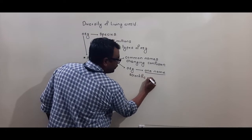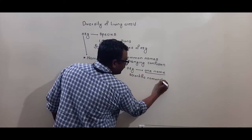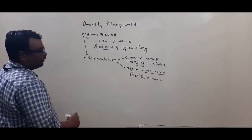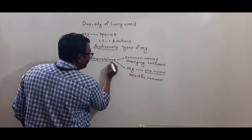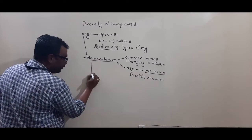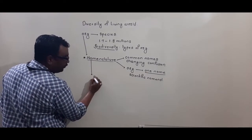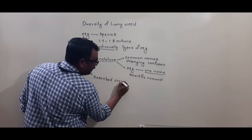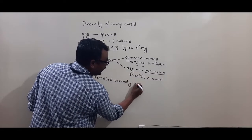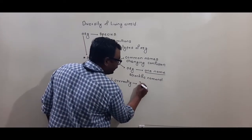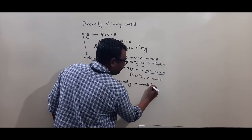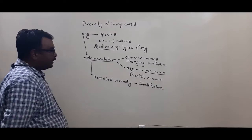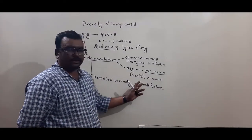Giving one name to each organism is called scientific nomenclature. Scientific nomenclature means all organisms are given one specific name that is common to the whole universe. When dealing with nomenclature it is essential that the organism be described correctly. Describing the organism correctly is called identification. So: giving a proper name to an organism is nomenclature, and describing the organism correctly is identification.